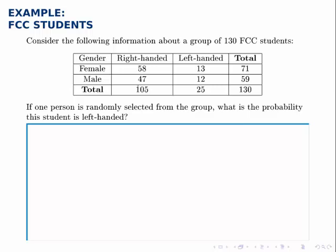For instance, the total right-handed is simply the male right-handed plus the female right-handed. Adding those together, we get 105. You can add up each row and column. Once you have these row and column totals, if you add together the two column totals, you get 130, and if you add together the two row totals, you also get 130. That's a nice check to make sure everything works out and that you haven't added something incorrectly.